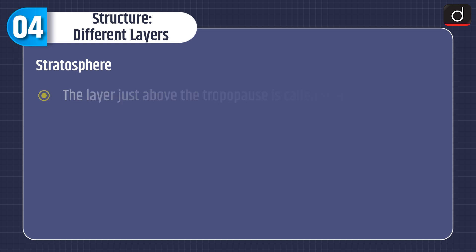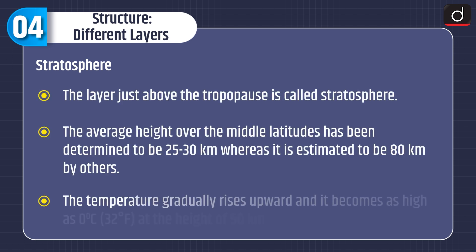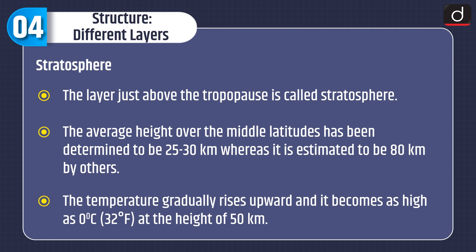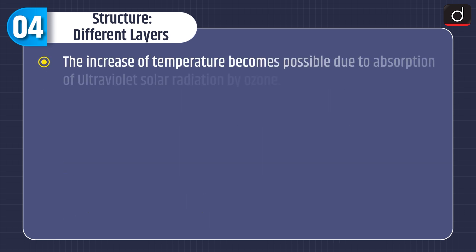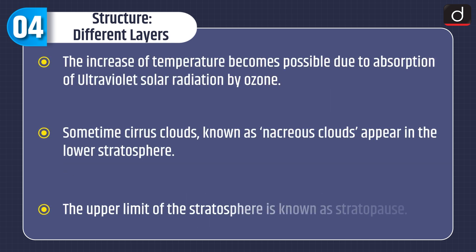Next is the stratosphere. The layer just above the tropopause is called stratosphere. The average height over the middle latitudes has been determined to be 25 to 30 km, whereas it is estimated to be 80 km by others. The temperature gradually rises upward and becomes as high as 0°C (32°F) at the height of 50 km. The increase in temperature is due to absorption of ultraviolet solar radiation by ozone. Sometimes cirrus clouds known as nacreous clouds appear in the lower stratosphere. The upper limit of the stratosphere is known as the stratopause.